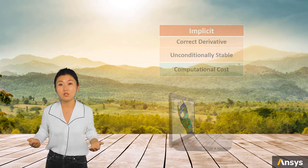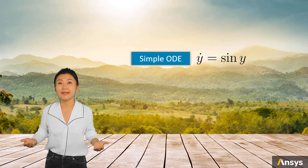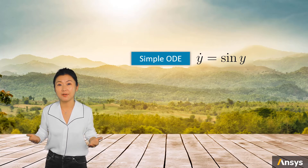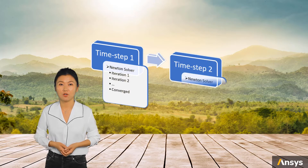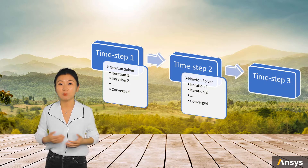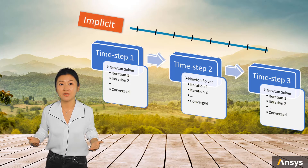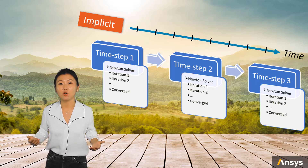The 1D ODE we solved in the previous lesson is overly simple. In research and engineering, ODEs are much more complicated and in many cases are highly nonlinear. To solve a nonlinear mechanical problem by implicit method, we need to go through Newton iteration in each time step to find the converged solution. For a large-scale, highly nonlinear problem, this process could be painful, so it's not realistic for the implicit method to have extremely small time step sizes. The analysis might keep going for days or months, or just fail due to lack of computational power.